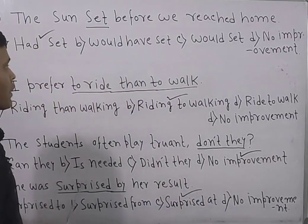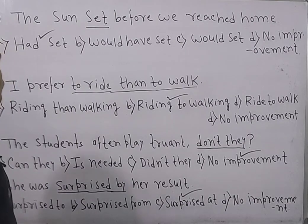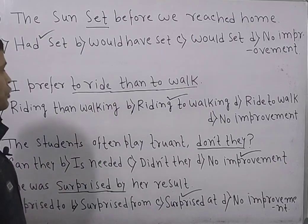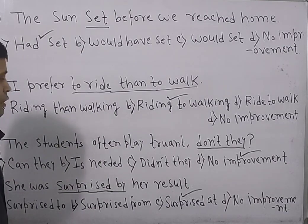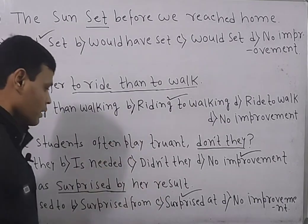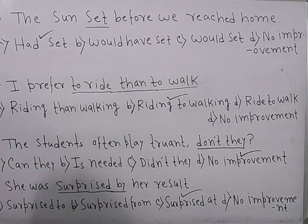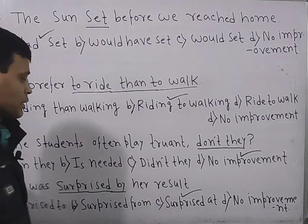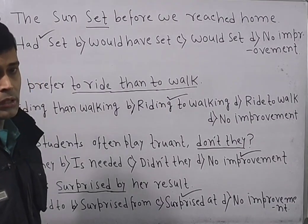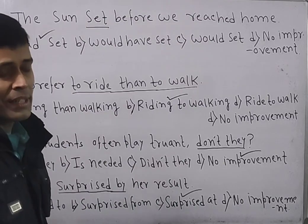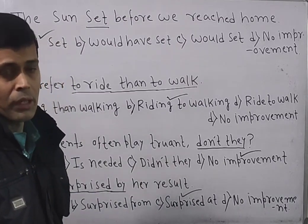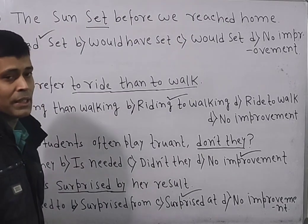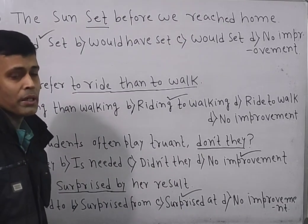Now let's go through the overall class. The first answer goes for option A — that is 'had set.' The second question goes for option B — that is 'riding to walking.' The third question goes for option D — that is no improvement, as it is all about question tagging. And the fourth question goes for option C — that is 'surprised at,' under the stimulus effect, where 'at' is used as the preposition of stimuli. So this is my class for today, as far as sentence improvement is concerned.